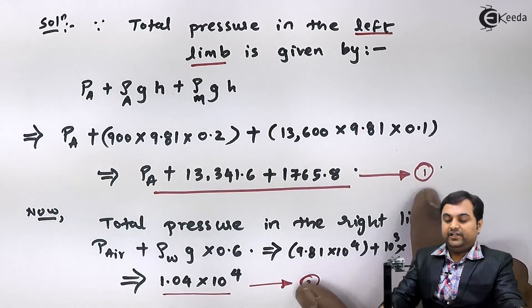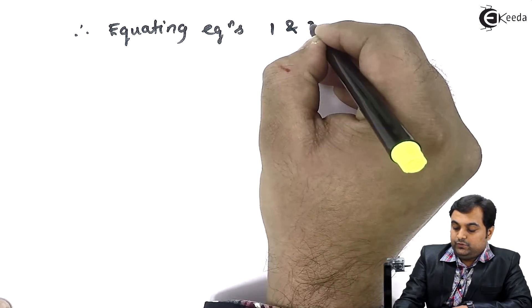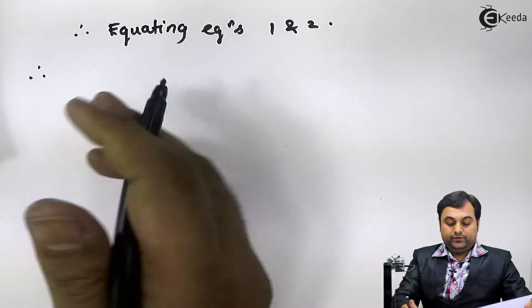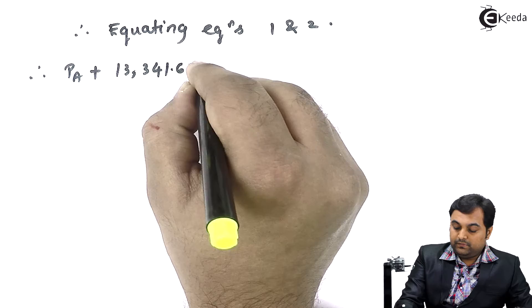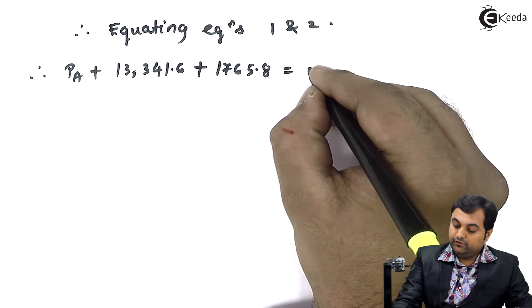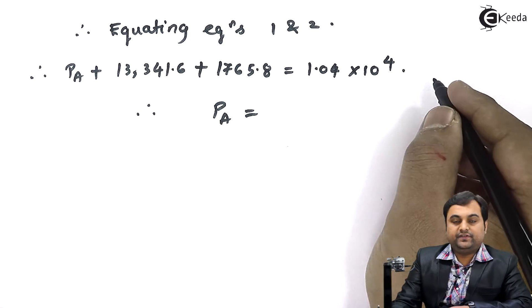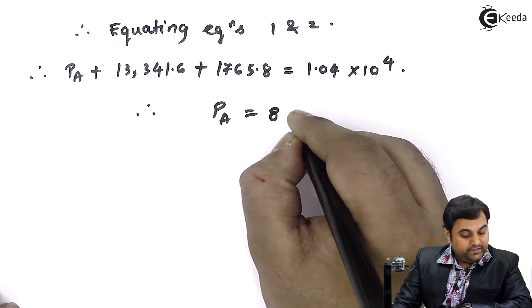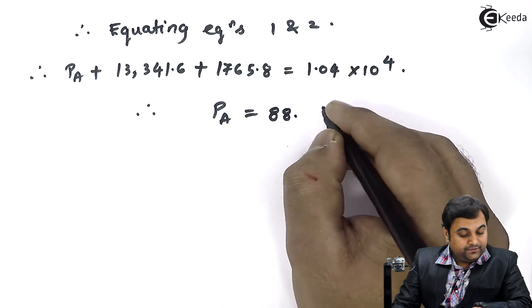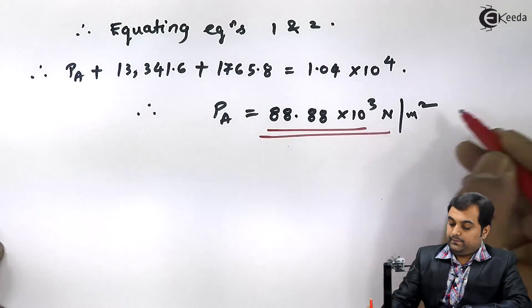Equating equations 1 and 2: P_A + 13,341.6 + 1765.8 = 1.04 × 10⁴. Shifting the terms to the other side, they become negative, and the final answer comes out to be 88.88 × 10³ Newton per meter square. This is the answer — this is the pressure in pipeline A.